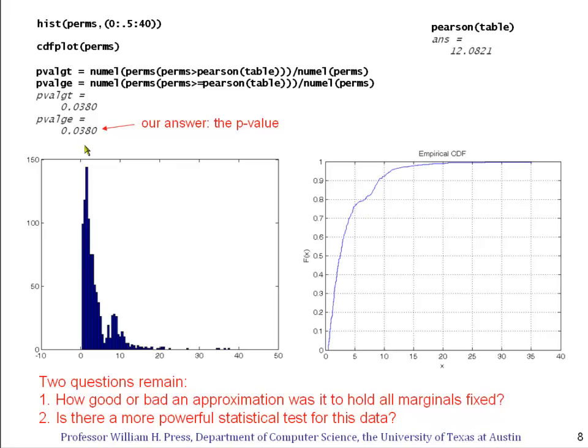Well, there are two questions that remain. First of all, we really did, although we did it by Monte Carlo, Fisher's exact test. And that holds all the marginals fixed. And that's not the way the data in the maternal drinking table was gathered. So we want to ask, was this a good or bad approximation to do? It might be that it's a perfectly good approximation. In fact, we'll see that it's very, very close. But conceptually, that's an important question. Then there's a second, slightly more subtle question that we'll come back to. And that is the question, is there a more powerful statistical test for this data than simply doing the permutation test or Fisher's test on the contingency table? And we'll see that there is a more powerful approach.